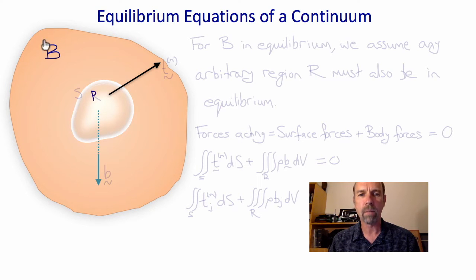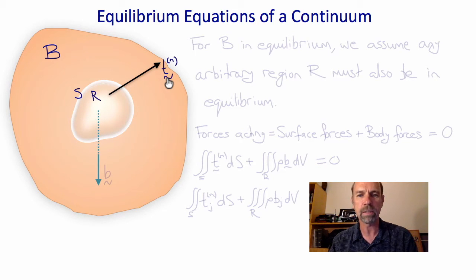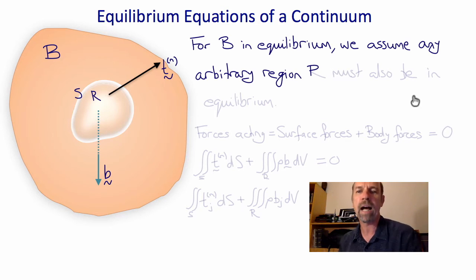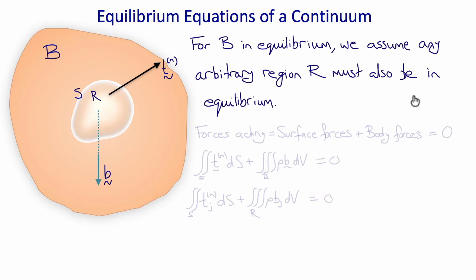Let's start by considering a body B, and in it an arbitrary region R with surface S. Acting on the surface are tractions T superscript N, and acting on the volume of the region is body force vector B per unit mass. For B in equilibrium, we assume that any arbitrary region R of that body must also be in equilibrium, so the sum of forces — surface forces plus body forces — must equal zero.